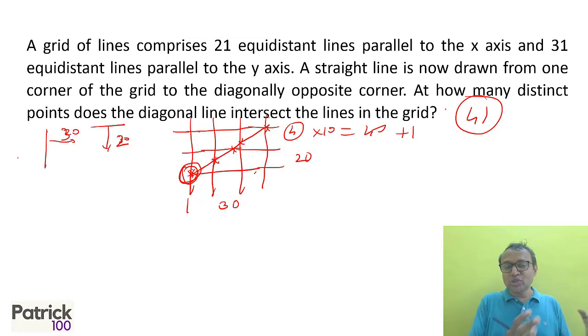So whenever you have big numbers, take smaller versions of it and work on those. Since after putting the first lines I have 30 lines and 20 lines extra, I put 2 lines and 3 lines extra and see how the line that goes from one corner to the opposite corner intersects. They intersect at 4 points ignoring the first point. Then 4 more points, 4 more points and so on, 10 times, because I have to add 20 and 30 points. So total 40 points and then the initial 1 gives 41.